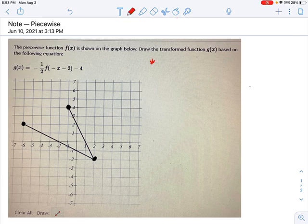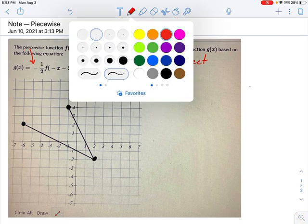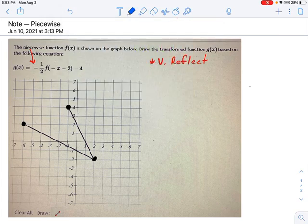So I have a vertical reflection, and you can see that with this negative sign right there. And I also have, let's see what else we have.